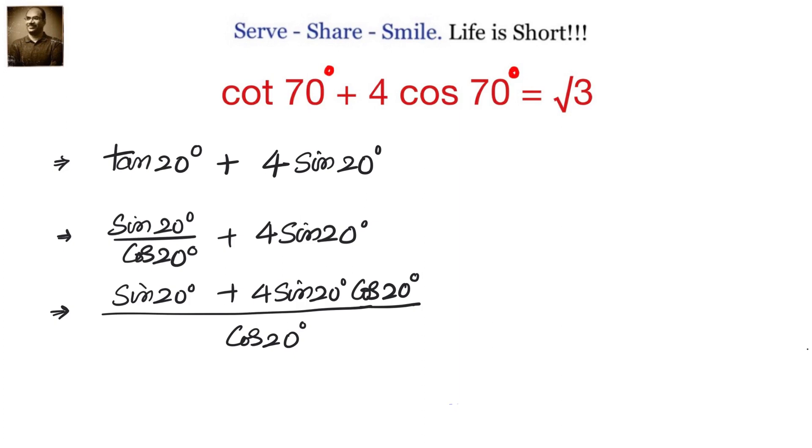Now 4 sin 20 cos 20 we can write as 2 sin a cos a equals sin 2a. So it will become sin 20 plus 2 sin 20 cos 20 will become sin 40.